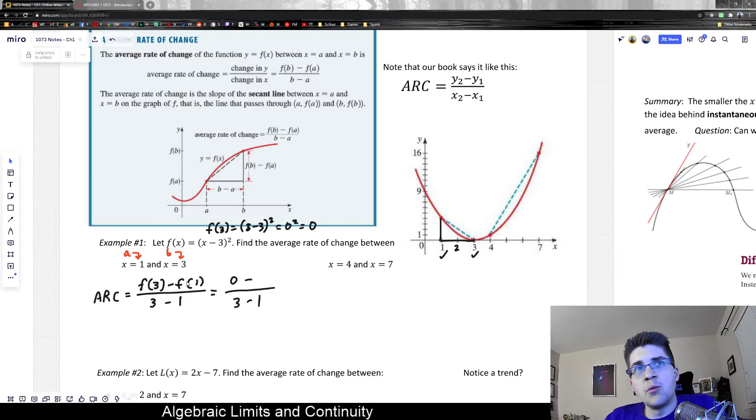So f(3) is going to be equal to 0. And then I also need to know, well, what is f(1)? And that would help me finish my ratio here. Well, f(1), in the same way, I could just plug that in. And f(1) would be equal to (1 - 3)². That's going to be (-2)². And of course, a negative squared always makes a positive, which would leave me with 4.